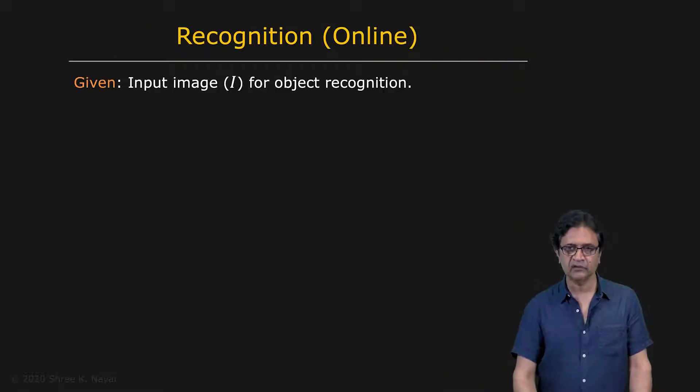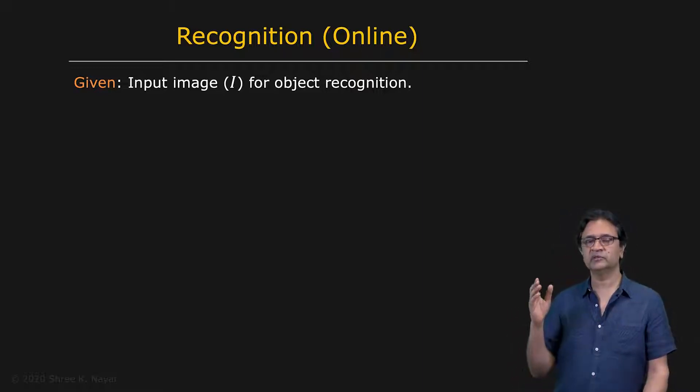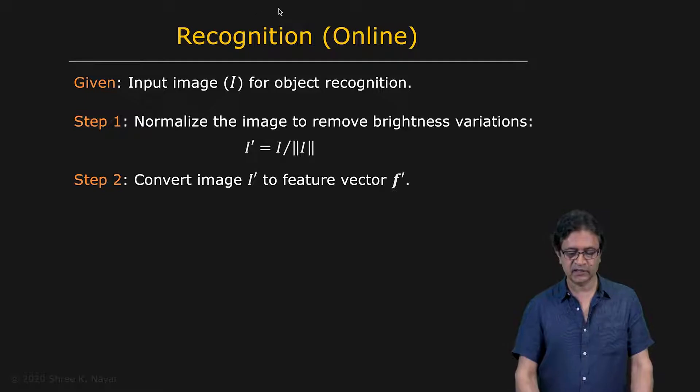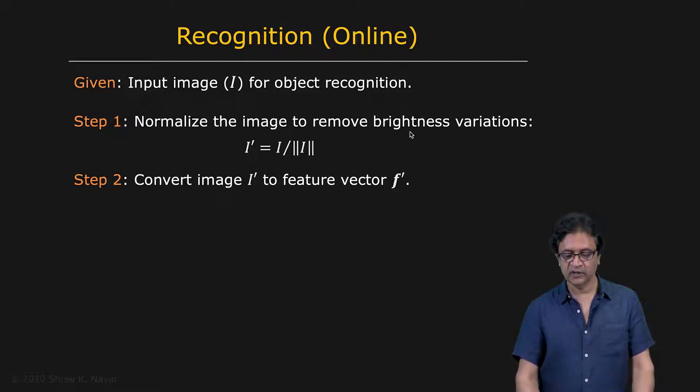And now for recognition, it's very easy. You have an input image. We're going to assume that we can segment this input image and we can actually have our objects of interest without any occlusion. We're going to take those segmented regions and rescale them to fit into our bounding box. And then we're going to normalize. That's what we'll call an input image. Then we're going to normalize that to remove brightness variations. So it's I divided by magnitude of I. Convert that input image into a vector.